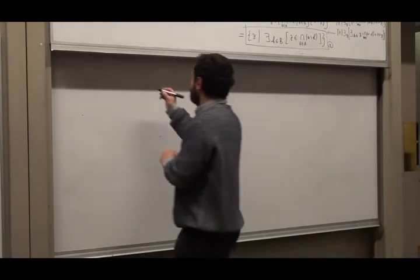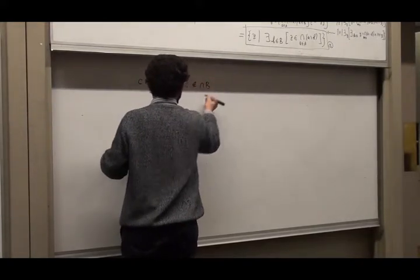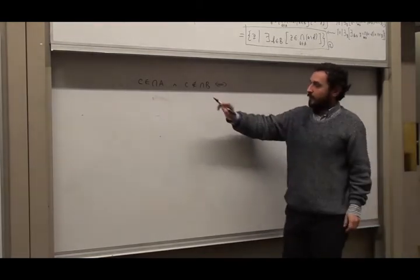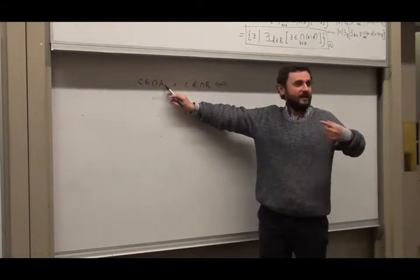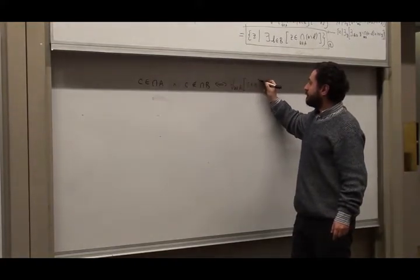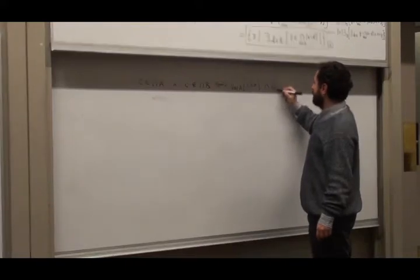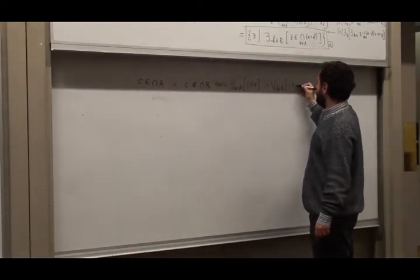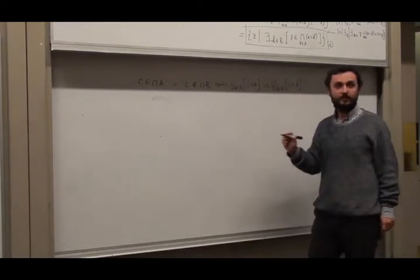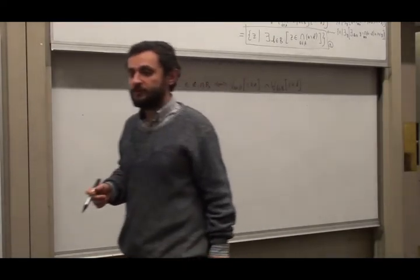Let's analyze further. C being an element of intersection A means being in every element of A — so for every a in A, c is an element of a. And c not being an element of intersection B means: it's not true that for every b in B, c is in b.